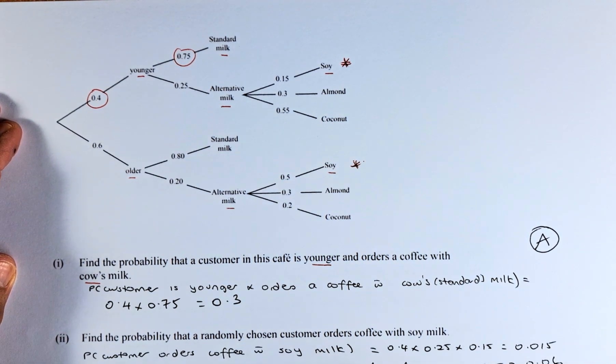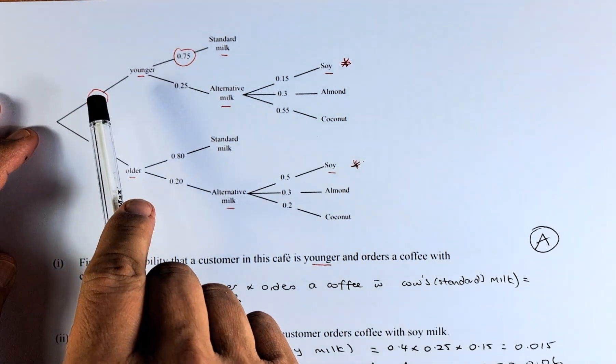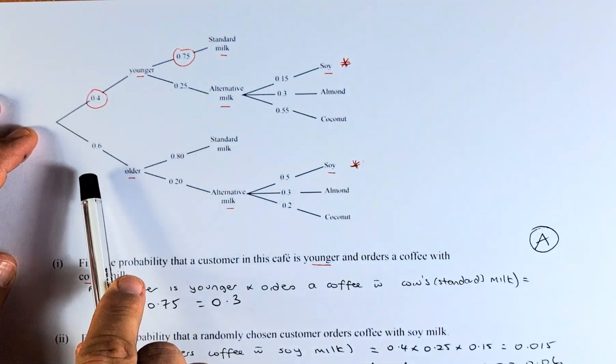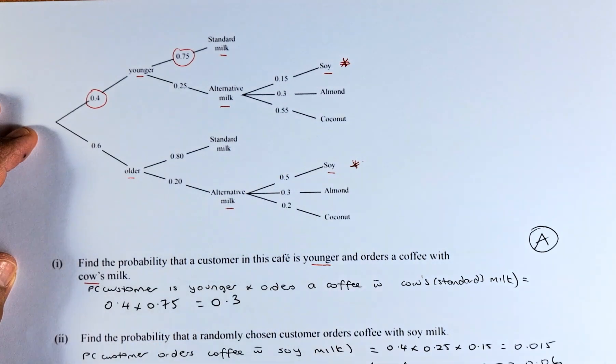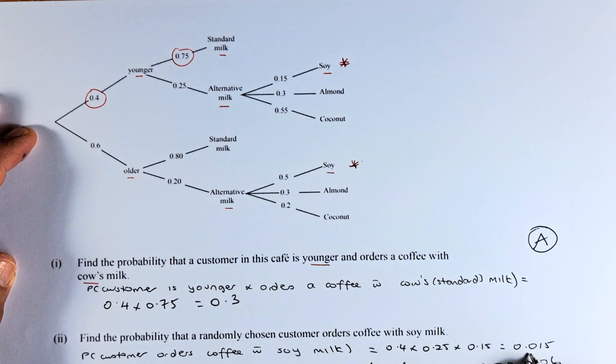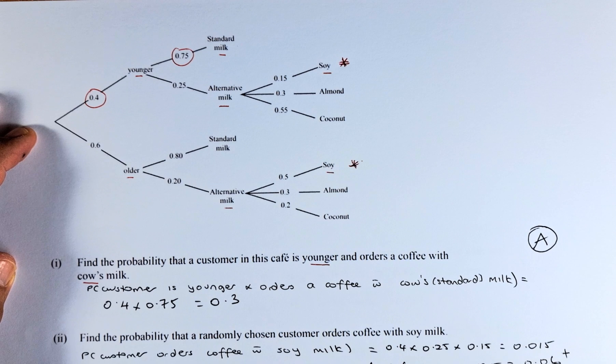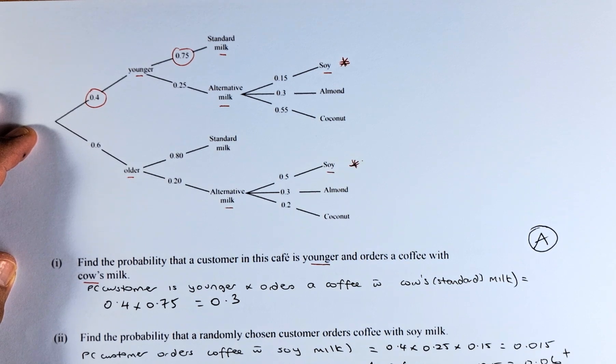So the possibility is when they are younger alternative and soy or older alternative and soy. So when you add them up together, 0.015 plus 0.06 and the total probability is 0.075.